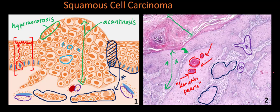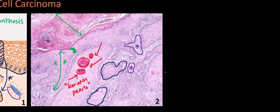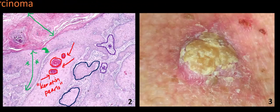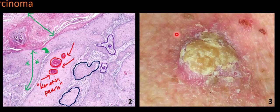Now let's look at what squamous cell carcinoma looks like clinically. The surrounding skin in this individual is rather atrophic, thin, and even hyperpigmented in some areas — all signs of chronic sun damage, which is one of the most important risk factors for skin cancer development. This already clues us in that the lesion we're seeing may well be a skin cancer.